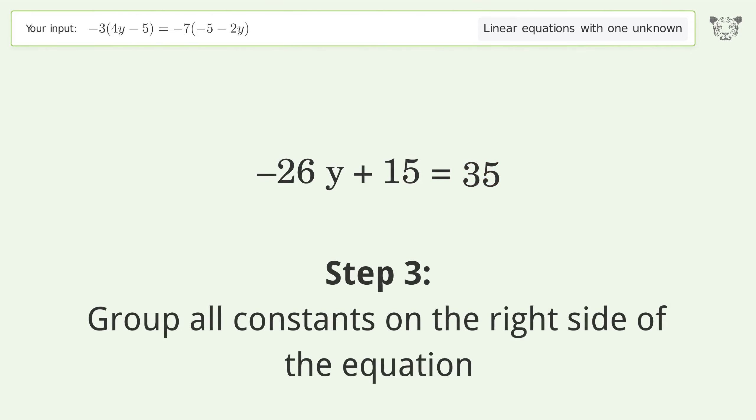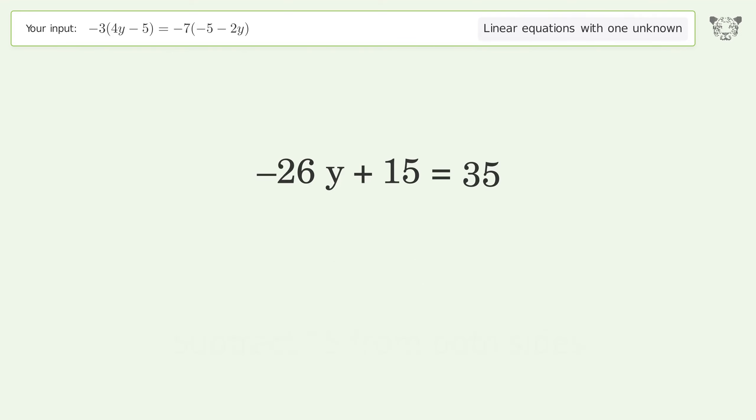Group all constants on the right side of the equation. Subtract 15 from both sides. Simplify the arithmetic.